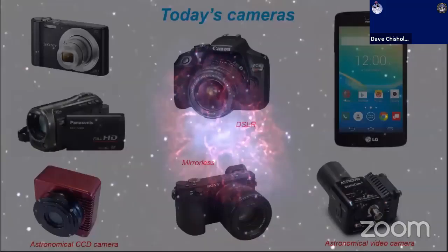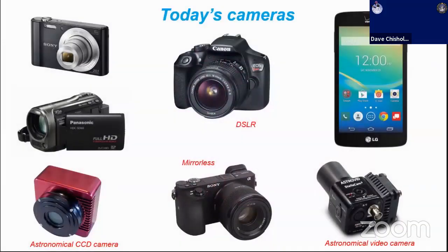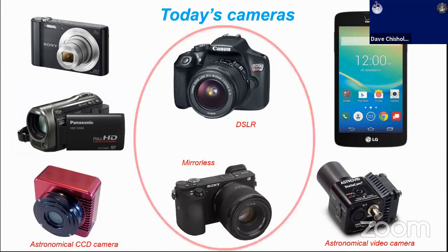Today's cameras give you quite a variety to choose from. As you've seen with Jim's presentation, he's into using astronomical video cameras and CCD cameras. But you can also do a lot of excellent imaging with today's DSLRs and mirrorless cameras. Even cell phones and video cameras have the capability to do certain forms of astro imaging. We'll focus on DSLRs and mirrorless because these are amongst the most popular cameras used by people actively engaged in astrophotography.